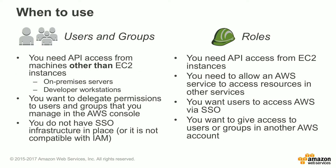When to use users or groups or roles: you would use users and groups when you need API access for machines other than your EC2 instances, such as on-premise servers or developer workstations. You can use users and groups when you want to delegate permissions to other users and groups within the AWS Management Console, or you don't have SSO infrastructure in place, or it is not compatible with IAM.